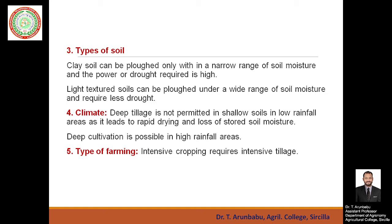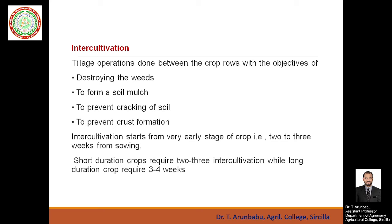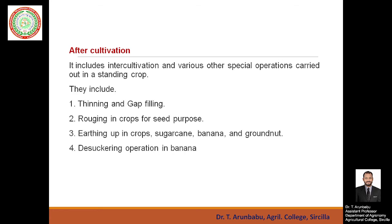The next factor is type of farming. Intensive cropping involving more crops — such as mixed cropping and intercropping — requires intensive tillage. These are the main factors influencing tillage. Regarding intercultivation: tillage operations done between crop rows serve to destroy weeds, form a soil mulch on the soil surface, and prevent soil cracking and crust formation. Intercultivation starts 2 to 3 weeks after sowing. Short-duration crops require 2 to 3 intercultivations, while long-duration crops require 3 to 4.